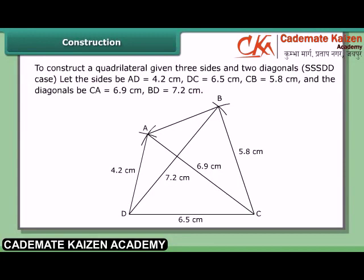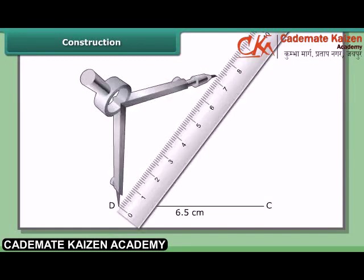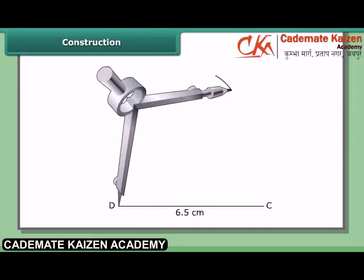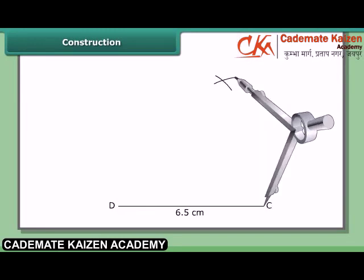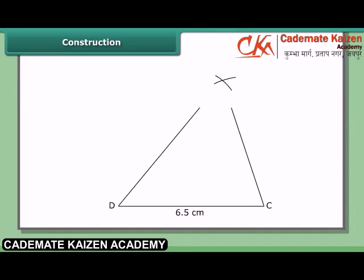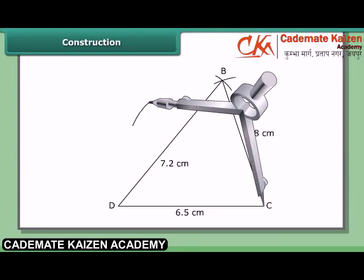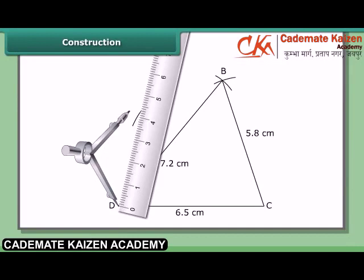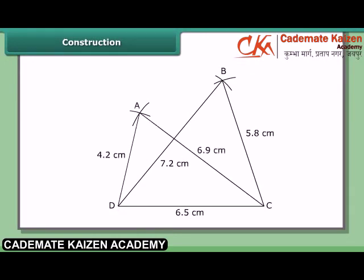Constructing triangle BCD: draw DC = 6.5 cm. With D as center and radius 7.2 cm, draw an arc. With C as center and radius 5.8 cm, draw another arc to cut the previous arc at B. Join CB and DB. Constructing triangle ACD: with C as center and radius 6.9 cm, draw an arc on the same side of DC. With D as center and radius 4.2 cm, draw another arc to cut at A. Join CA, DA, and AB. Then ABCD is the required quadrilateral with diagonals AC and BD.